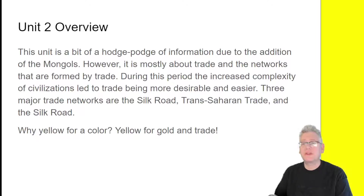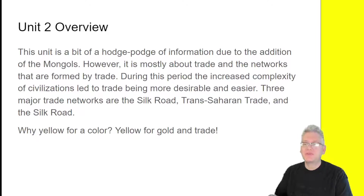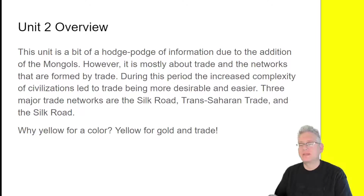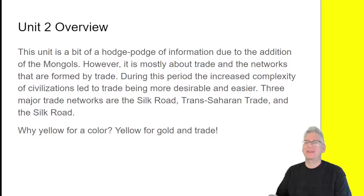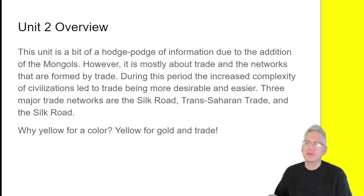During this period, the increased complexity of civilizations led to trade being more desirable and a lot easier. There are three major trade networks we're looking at here. The Silk Road is what we're looking at today. We'll be doing the Trans-Saharan trade — that's a mistake right there — and the Indian Ocean trade in the future. That's a boo-boo, kids.